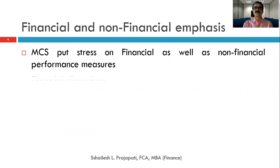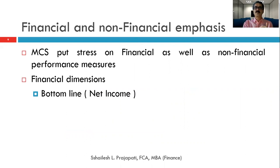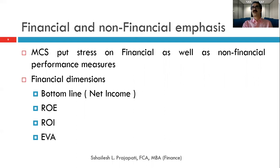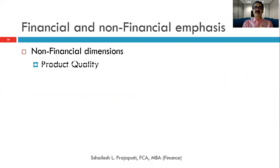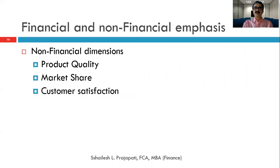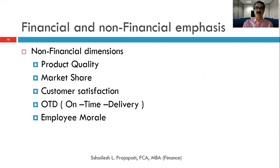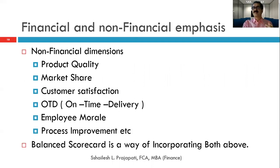There are two types of emphasis: financial and non-financial. MCS puts stress on both. Financial emphasis includes bottom line, ROE (return on equity), ROI, and EVA (economic value added). Non-financial dimensions include product quality, market share, customer satisfaction, on-time delivery, employee morale, and process improvement. The balanced scorecard is a way of incorporating both of these.